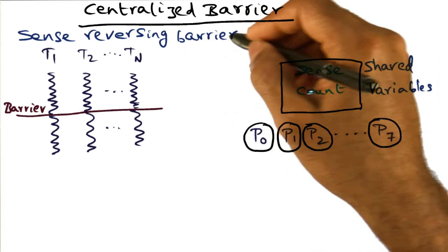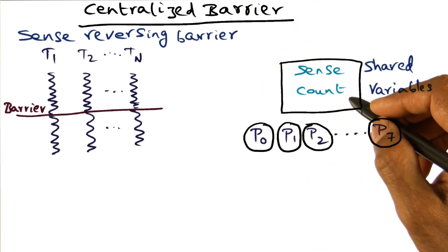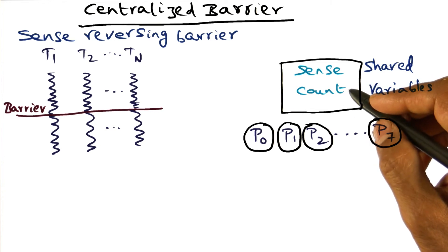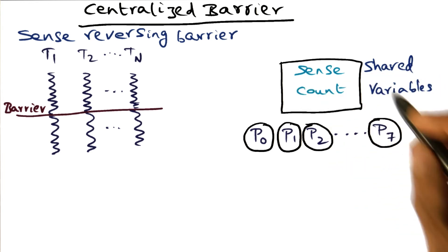In the sense reversal barrier, we're going to get rid of one of those spinning episodes. The arrival one, we'll get rid of it. So we don't have to spin on count becoming zero, and we'll see how that is done.